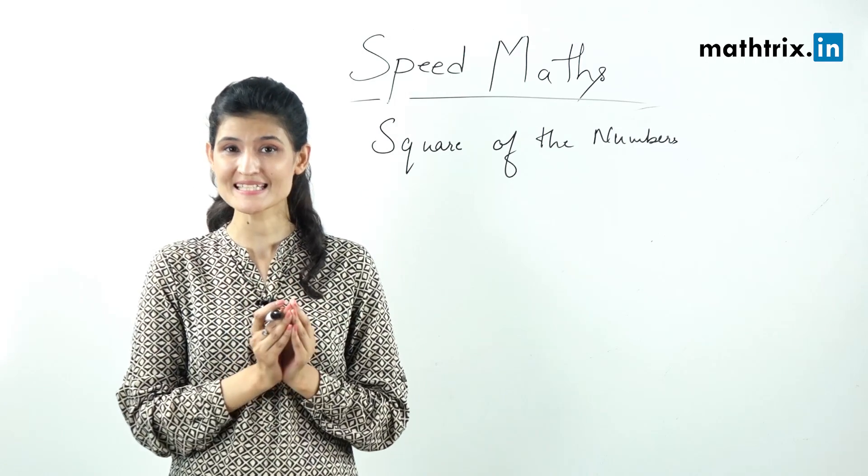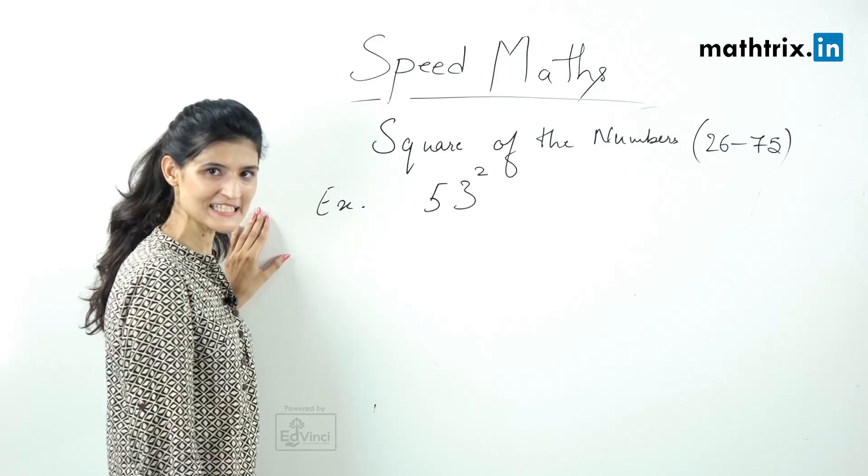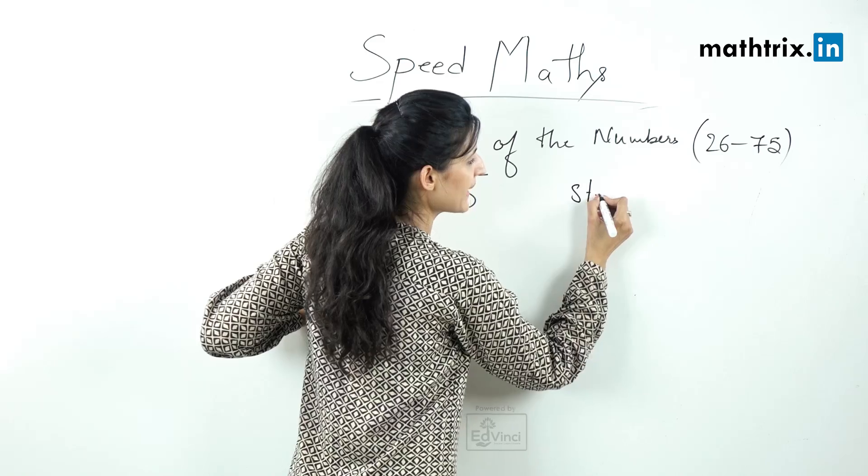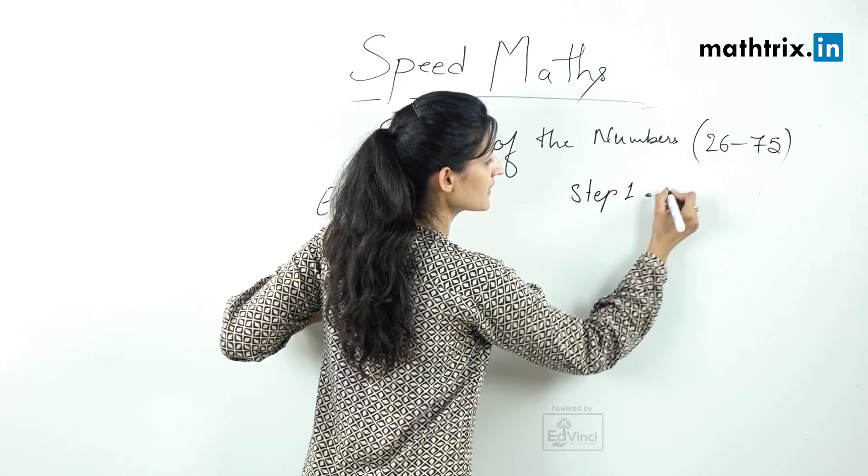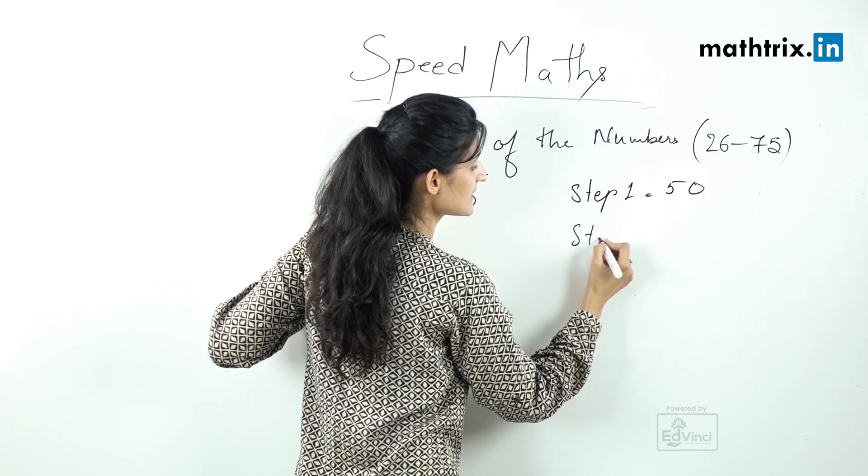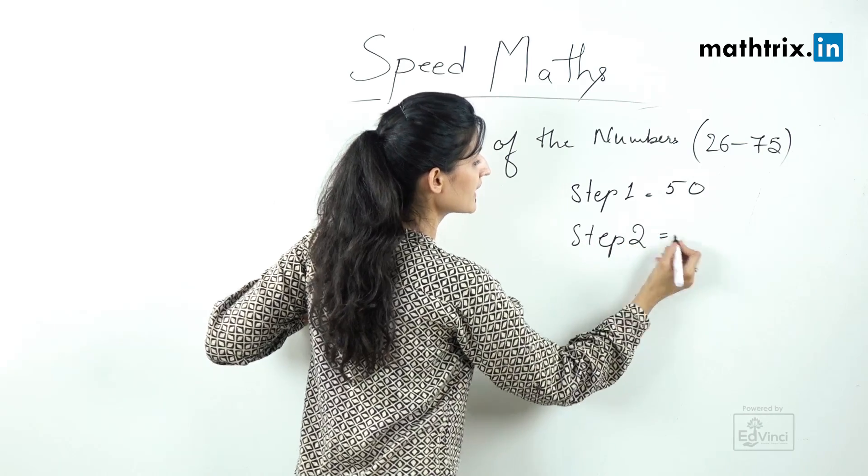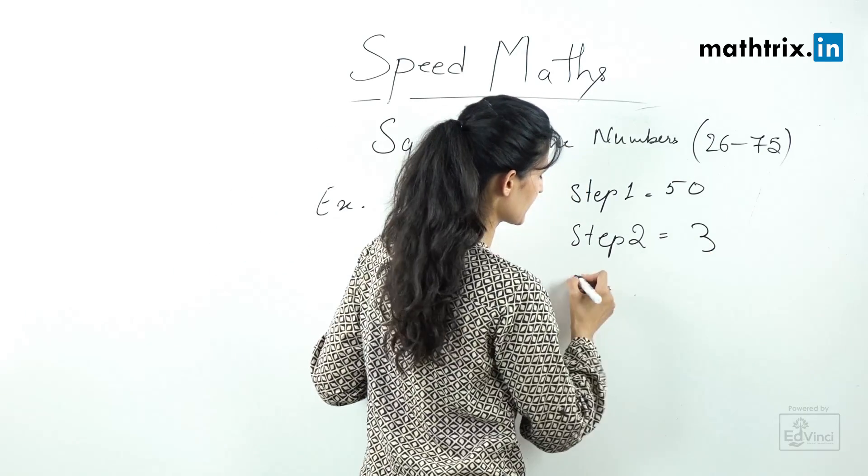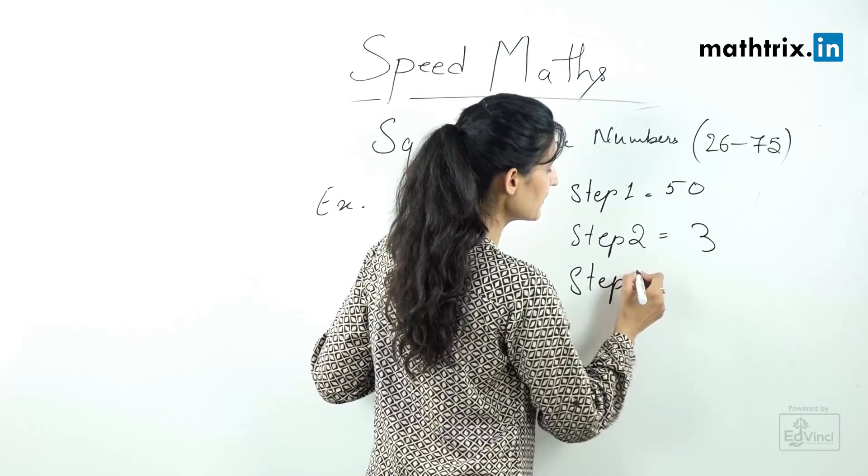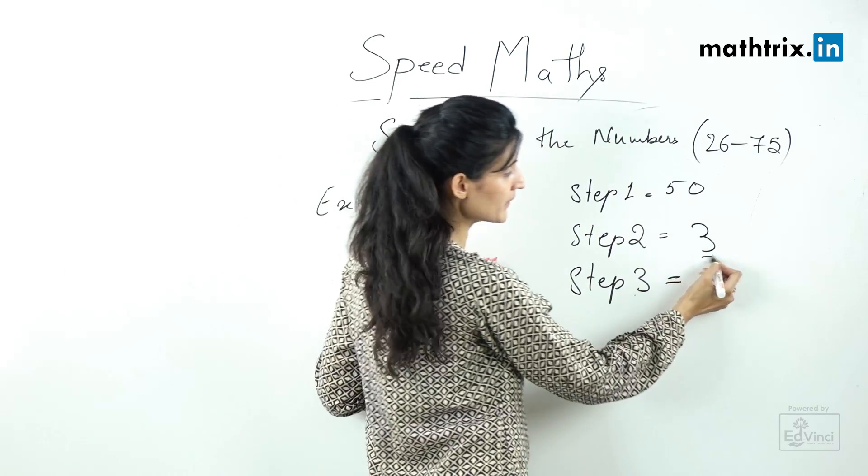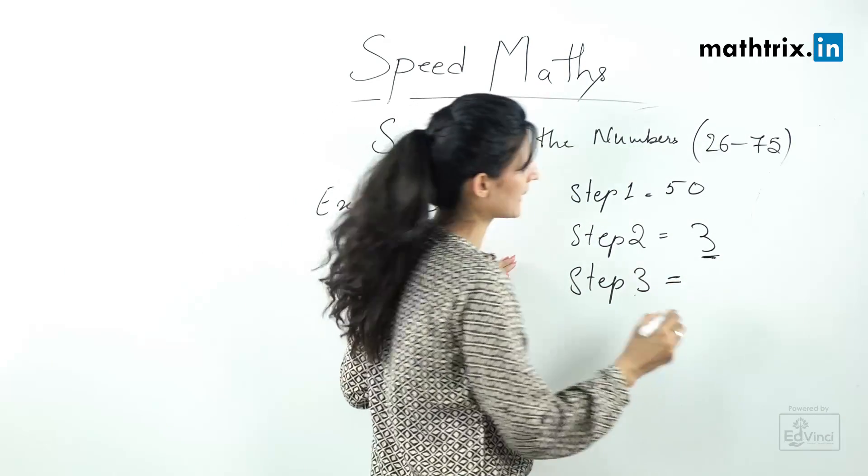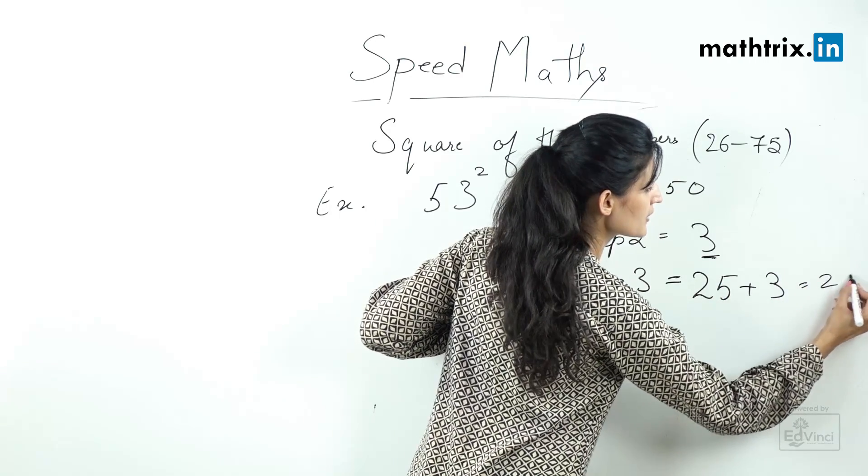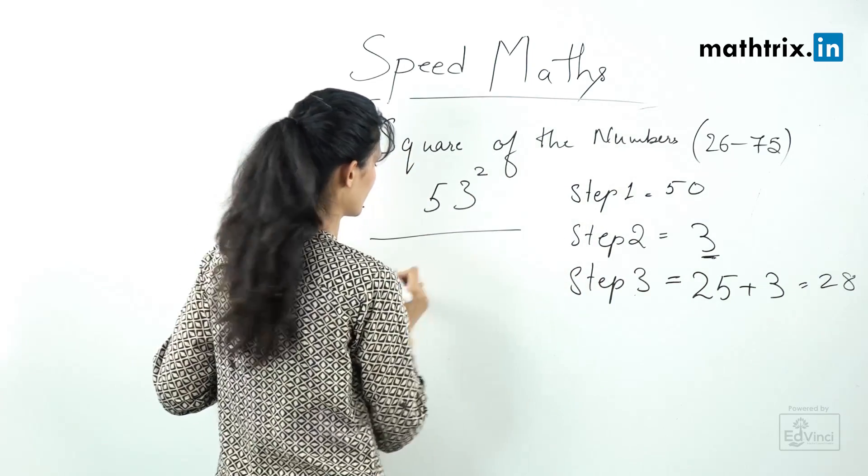Let's take an example of 53 square. Step number one, base should be 50. Step number two, find the difference of the number with the base 50, which is 3. Step number three, add this number to the constant 25, that means 25 plus 3 equals 28. You should write it here.